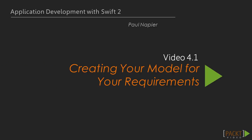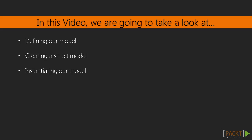So now we're going to create the model for our application. We're going to begin by defining what our model actually is, then we're going to create a struct, and finally we're going to look at how we can instantiate our model.